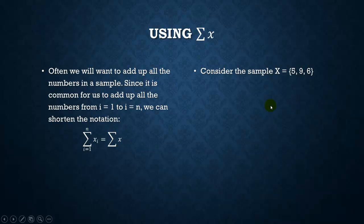Alright, so let's just use this for an example. So consider the sample 5, 9, 6. So we have a sample size of 3, or n equals 3. So let's find the summation of the x's, the summation of the squared x's, and then the summation of the x's, all of that squared.